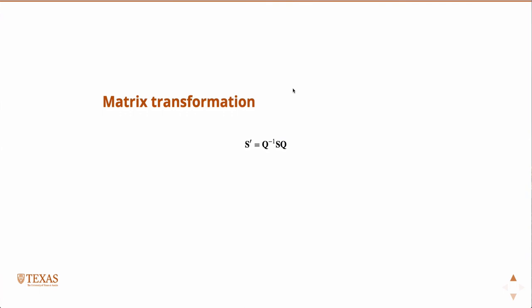Likewise, matrices will transform the same way so that if you're given a matrix s and a rotation matrix q, then s will transform into s prime via this transformation. And then, like we just showed, if q is chosen such that its columns are the eigenvectors of s, then s prime will be diagonal, with its entries corresponding to the eigenvalues of s.